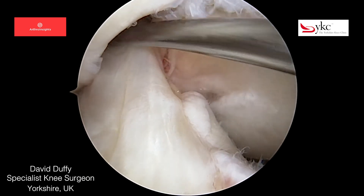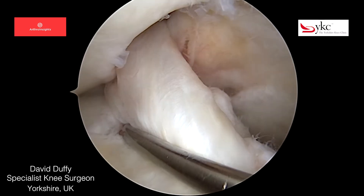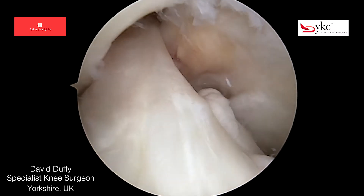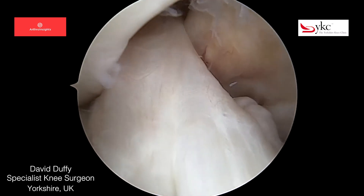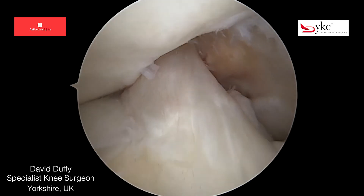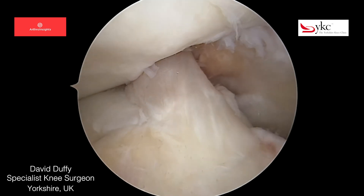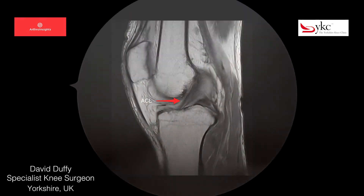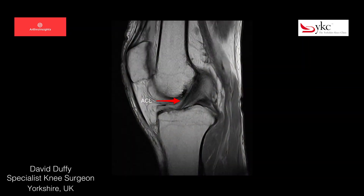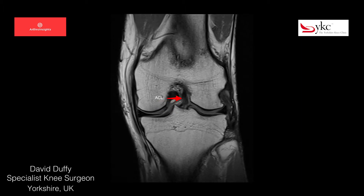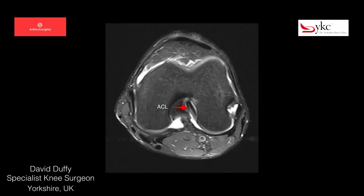Here I'm examining a normal ACL looking at three main features: the size of the ligament, its tension, and its attachment points to the bones. This is a sagittal MRI of the knee, essentially looking from the side. The ACL is the dark structure running diagonally. Identifying the ligament on the coronal and axial views can be more challenging and takes practice.